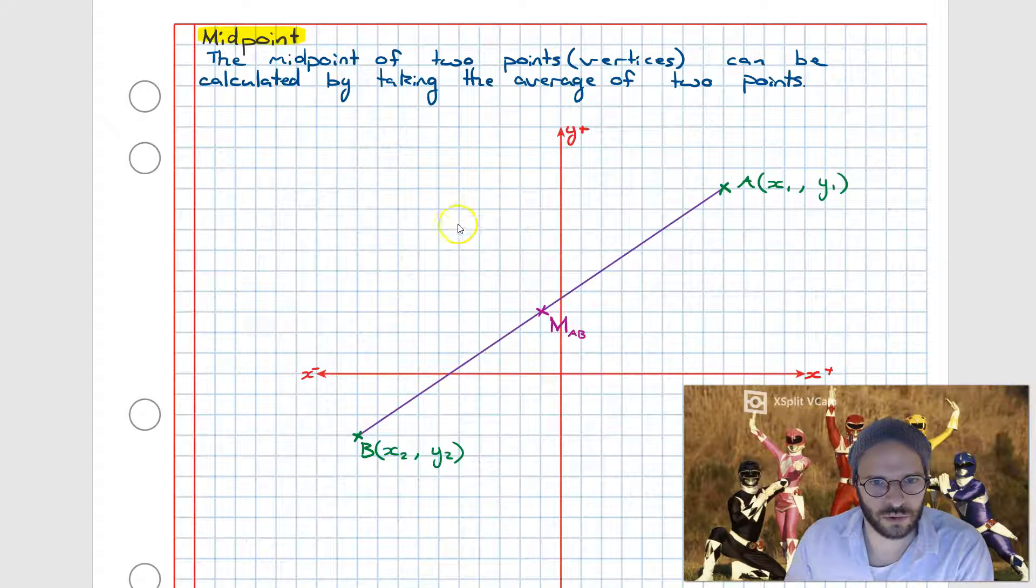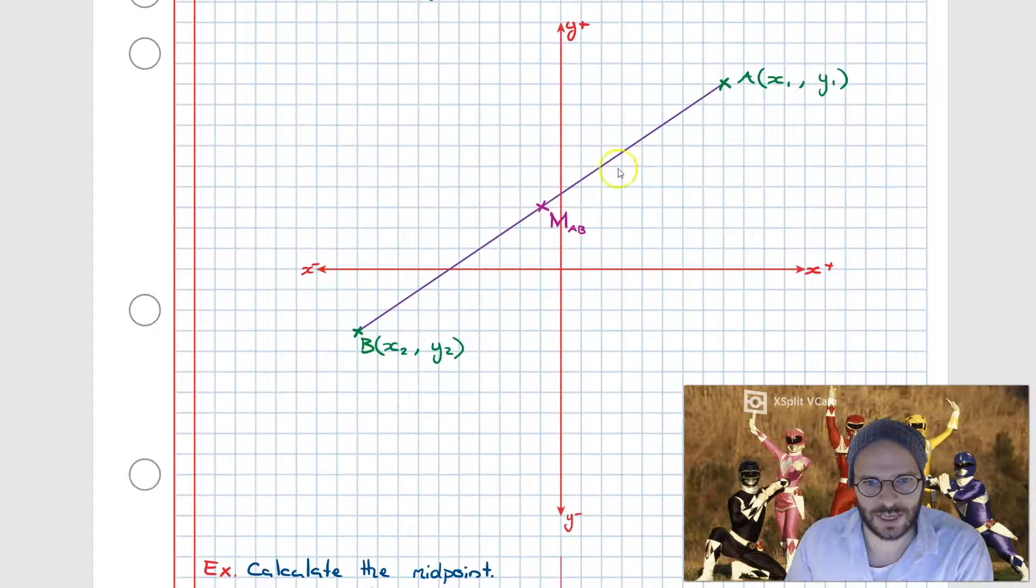Now the midpoint of two points can be calculated by taking the average of two points. Looking down on a Cartesian plane here we have two points, points A and B. In between points A and B we have this third point that's called M_AB. What this M_AB is, is the midpoint of points A and B.